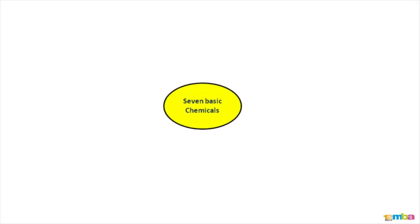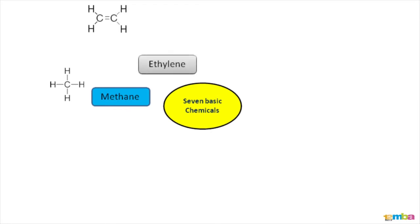The seven basic chemicals are illustrated here. Starting with methane, a single bond carbon item attached to four hydrogen items. The next basic chemical is ethylene — two double bond carbon items attached to hydrogen items.